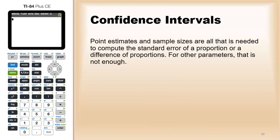Point estimates and sample size are all that's needed to compute the standard error for a proportion or a difference in proportions. However, for other parameters, that's not usually enough.